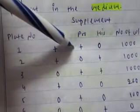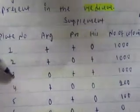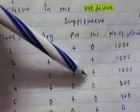In plate number two, arginine and histidine are present, and among these plates, total thousand colonies appear. In the third plate, we can see that proline and histidine are present. Total thousand plates occur.